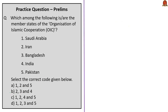Which among the following are member states of the Organization of Islamic Cooperation? The options include Saudi Arabia, Iran, Bangladesh, India, and Pakistan. All the countries are members except India. Please keep this in mind. So the correct answer is option D: 1, 2, 3, and 5 only, because India is not a member of the OIC.